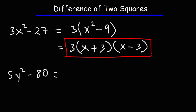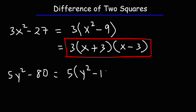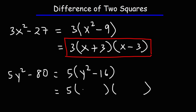The next one is very similar: 5y squared minus 80. We can't take the square root of 5 and get a whole number — it'll give us an irrational number. So we need to factor out the GCF, which is 5. 5y squared divided by 5 is y squared, and negative 80 divided by 5 is negative 16. Now we have a difference of two perfect squares. The square root of y squared is y, and the square root of 16 is 4. So we're going to have 5 times y plus 4 times y minus 4.